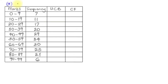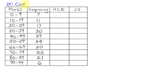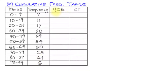This is going to be the solution to the question on the cumulative frequency curve. First, we are asked to find the cumulative frequency table. The features of the table are: we have our marks as given, we have the frequency which is also given, but we are going to compute the upper class boundary (UCB) and the cumulative frequency. This is the way to go about it.